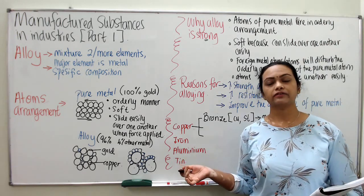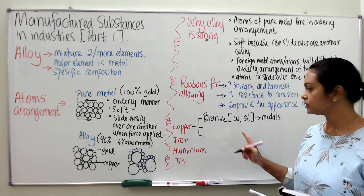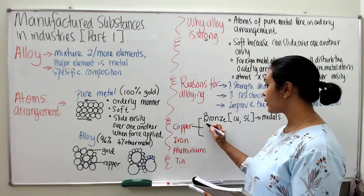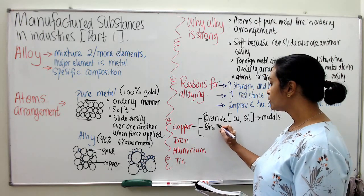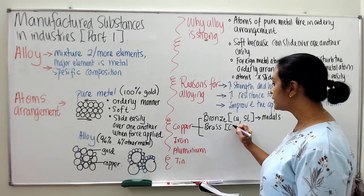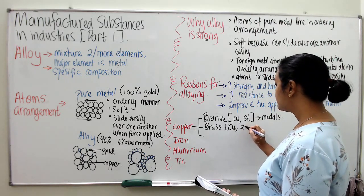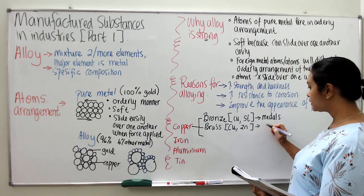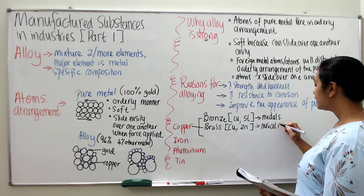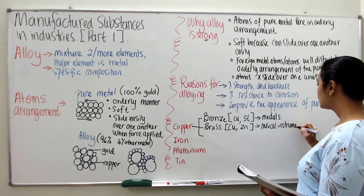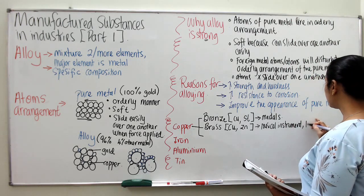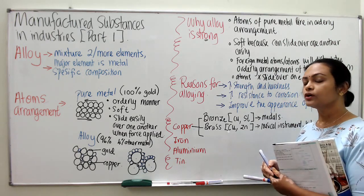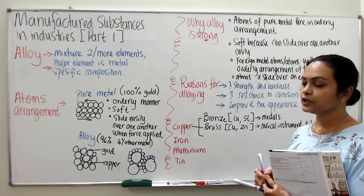The use of bronze — as we know, in Olympics and other activities, bronze is a type of medal used. Second is brass, which teacher explained just now. The major metal is copper, and the smaller percentage metal is zinc. The use of brass is to make musical instruments and kitchenware.